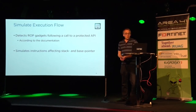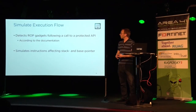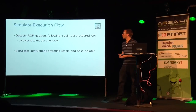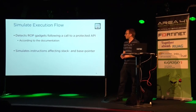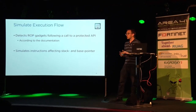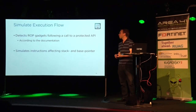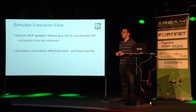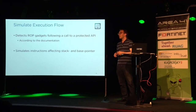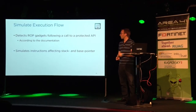The next mitigation is simulated execution flow. According to documentation, this should detect a ROP gadget following a call to a protected API. We're not 100% sure what it really does, but it seems to simulate instructions affecting the stack and base pointer, and does some sanity checks on them.